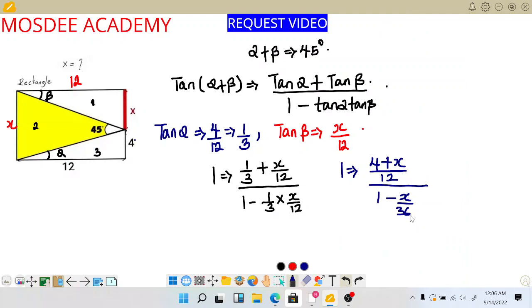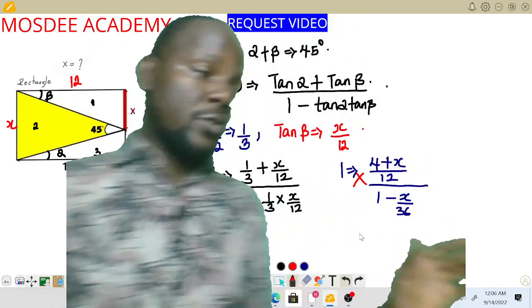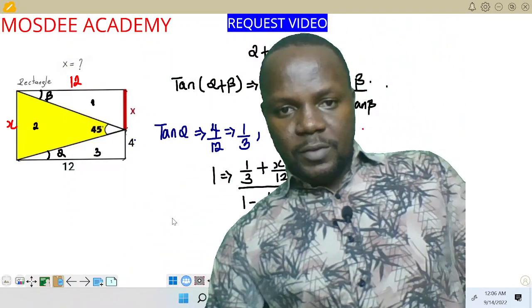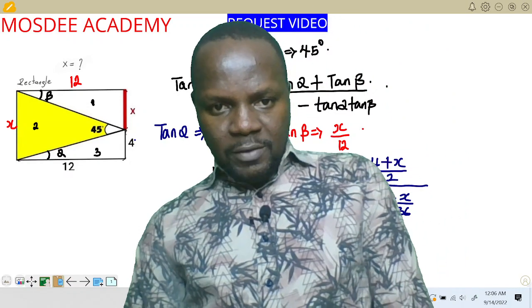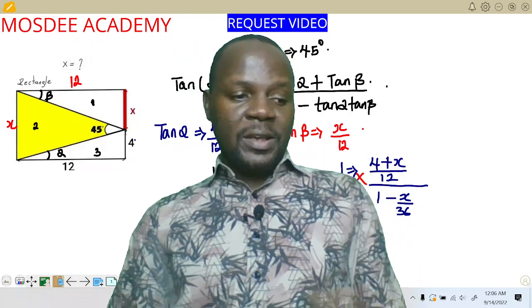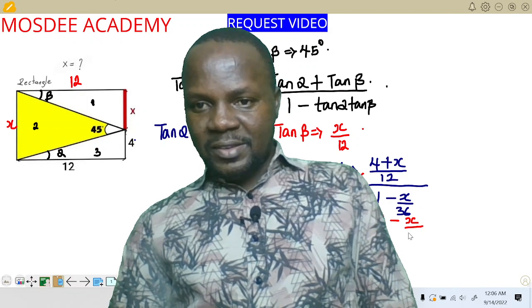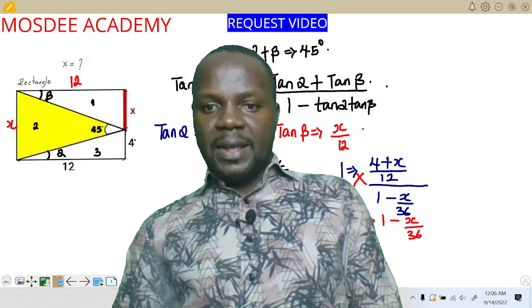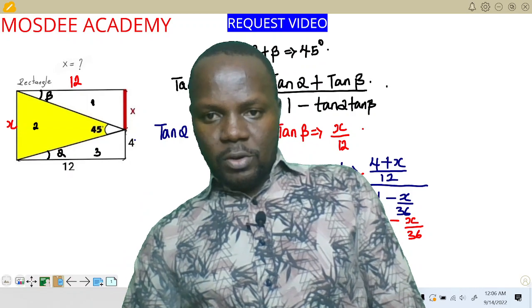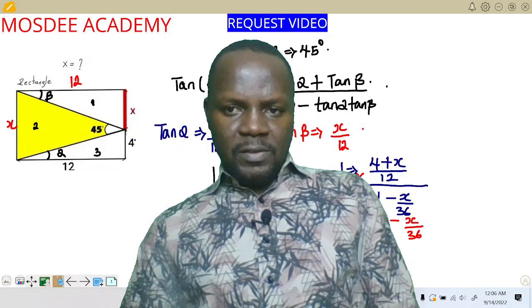So if we cross multiply, which is the last step to get the answer, remembering the question asks us to find x: (4 + x) over 12 equals 1 minus x over 36. Cross multiplying — you can confirm this — we get 12 plus 3x equals 36 minus x. Collecting like terms, 3x plus x gives 4x, and 36 minus 12 gives 24.